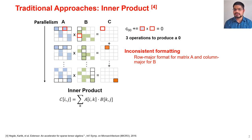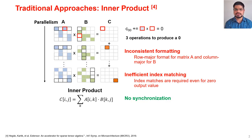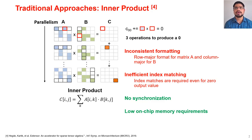The major advantages and disadvantages of the inner product approach: the first disadvantage is inconsistent formatting, because matrix A is stored in row-major order and matrix B is stored in column-major order. Then we have inefficient index matching, as we already saw. However, some good things about this approach is that it does not require any synchronization because different output elements can be produced in parallel, and it has low on-chip memory requirements because it just requires storing a row of A and a column of B in on-chip memory.